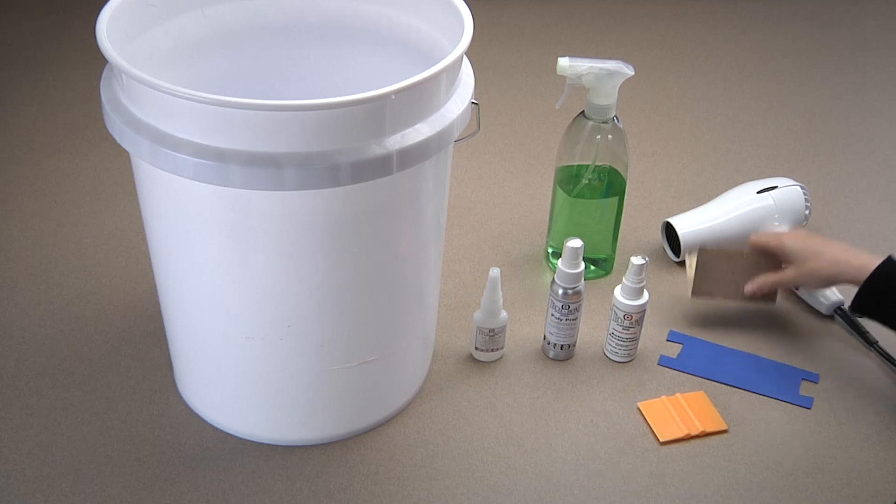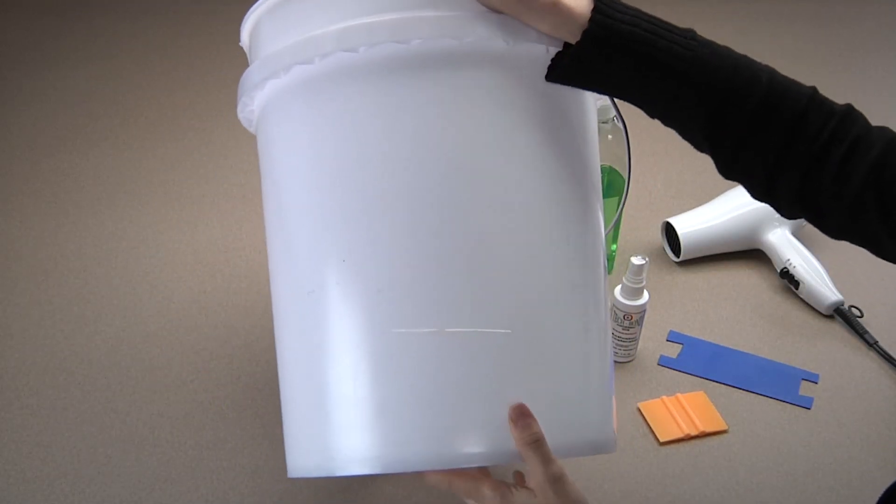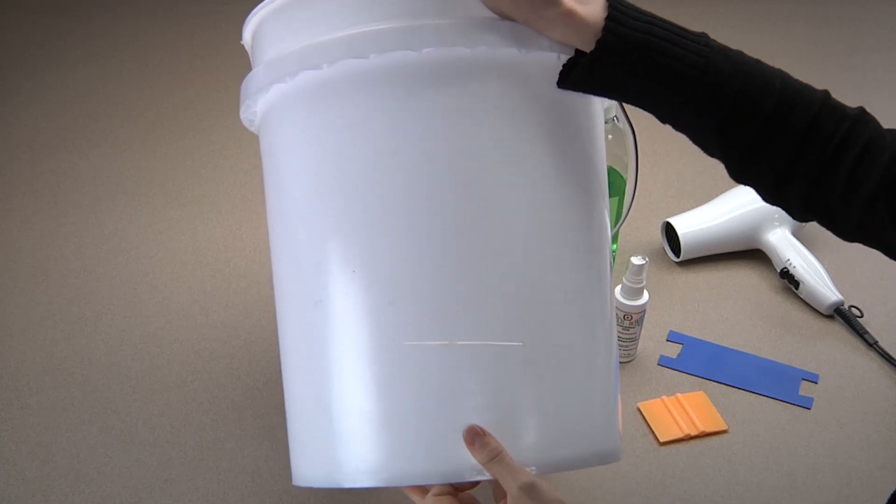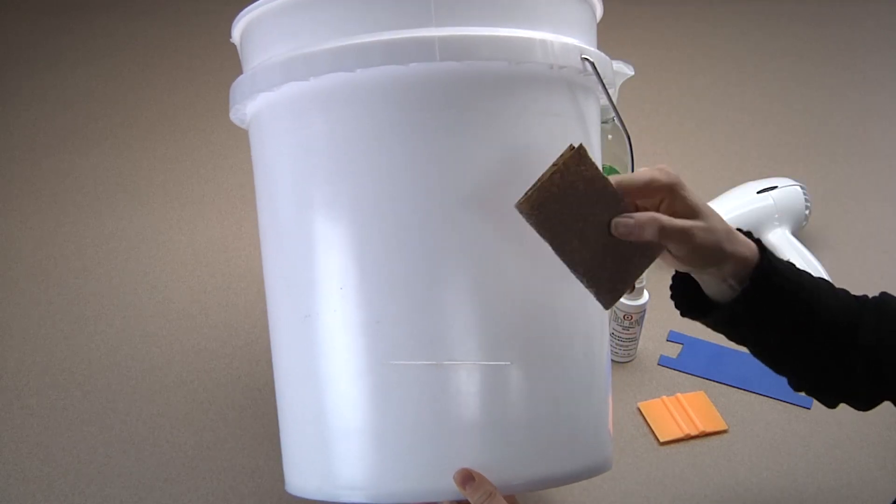First step is always surface preparation. For any repair, you need to rough the plastic surface to get rid of dirt and grease, and to prepare the surface around the crack. We are going to use 60 grit sandpaper.